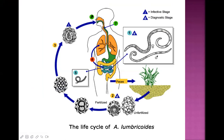Now let's focus on the life cycle of Ascariasis. The adult female and male worms live in the small intestine where they reproduce. The female passes lots of eggs in the fecal matter — some unfertilized, some fertilized. After a few days of development in the soil, the egg matures into an infective form. This is the infective stage of this particular infection.